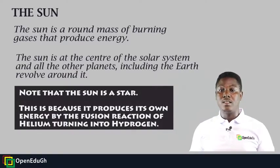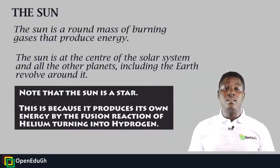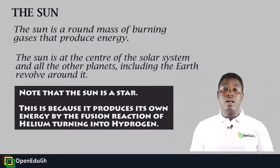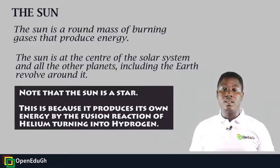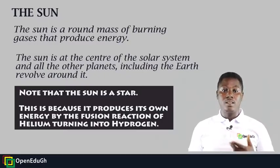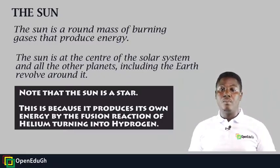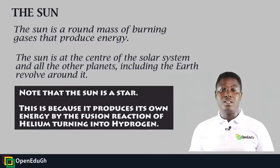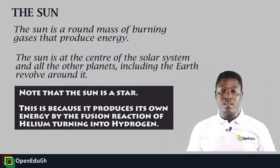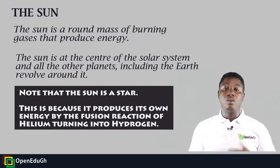The sun is a round mass of burning gases that produce energy. The sun is at the center of the solar system, and all other planets, including the Earth, revolve around it. Note that the sun is a star. This is because it produces its own energy by the fusion reaction of helium turning into hydrogen. Stars are space objects that produce their own energy through fusion reaction of gases.